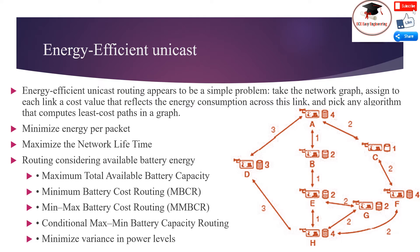Energy Efficient Unicast routing appears to be a simple problem. Take the network graph, assign to each link a cost value that reflects the energy consumption across this link, and pick any algorithm that computes the least cost path in a graph. The Dijkstra shortest path algorithm is used to obtain routes with minimal total transmission power. There are various aspects of how energy or power efficiency can be conceived of in a routing context. Consider the figure showing communication between node A and H, including link energy cost and available battery capacity per node.